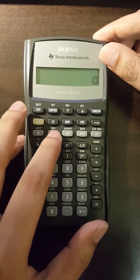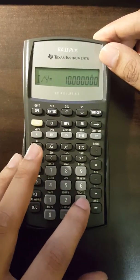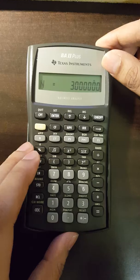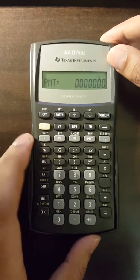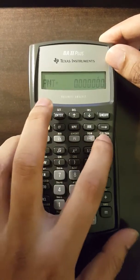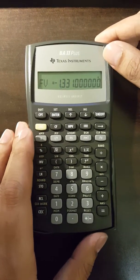I by Y is 10. N is 3. And PMT is 0. So we compute the future value and we get negative $1331.